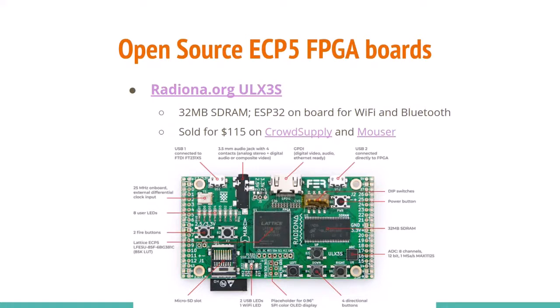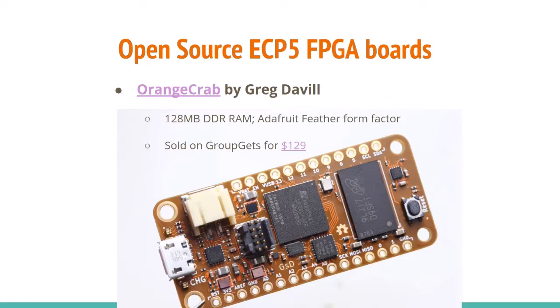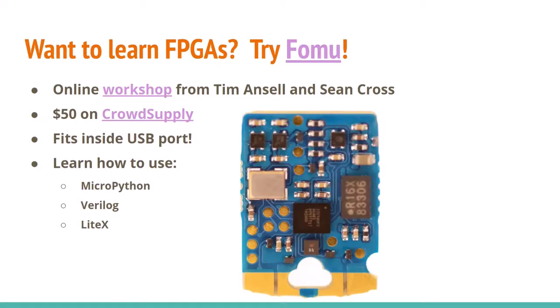You probably don't have the badge, but there are ECP5 open source dev board options. One is the ULX3S from a hackerspace in Croatia, available on CrowdSupply. There's also the OrangeCrab by Greg Davil, which I really like — it has 128 MB of DDR RAM so Linux runs much faster, in a small Feather form factor. If you're new to FPGAs, I highly recommend starting with the FOMU — it fits inside your USB port, has an online workshop, and takes you through examples from blinking LED in MicroPython to Verilog and LiteX.